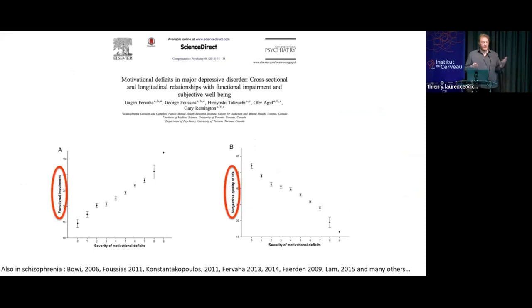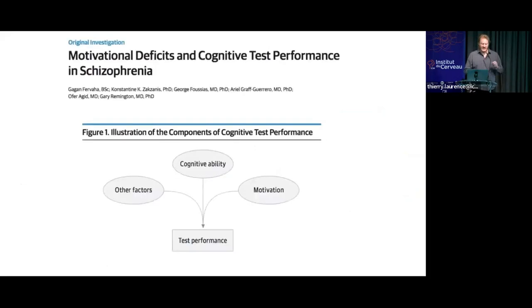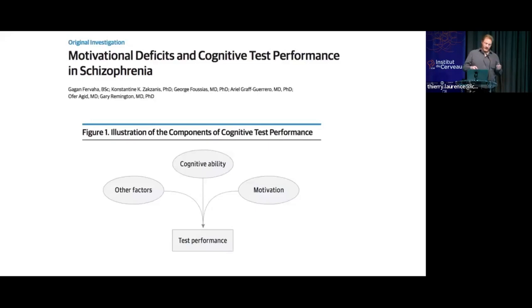Why is it so important? First, because it's part of the definition. Second, because it's correlated with a lot of features that are quite important for the patient, including functional impairment and subjective well-being — extremely correlated in depression and also in schizophrenia. Second, it's correlated with cognitive performance. If you're not motivated, you will perform badly not only in cognitive tests but also in everyday life.